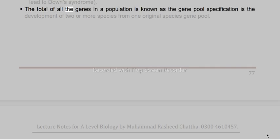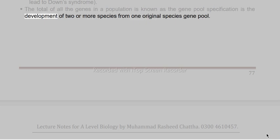The total of all the genes in a population is known as the gene pool. Speciation is the development of two or more species from one original species gene pool.